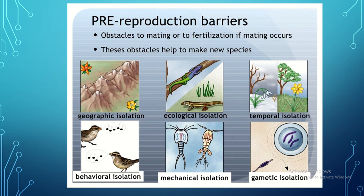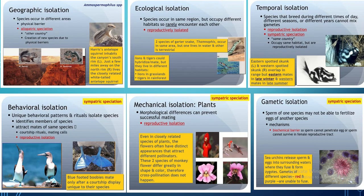The prezygotic barriers include geographic isolation, ecological isolation, temporal isolation, behavioral, mechanical, and gametic isolation. Geographic isolation means species belonging to the same population are placed in two different geographic regions, preventing them from encountering and interbreeding. For example, two squirrels present in the same region become separated by a geographic barrier, and after some time those squirrels — originally the same species — develop into two new species.